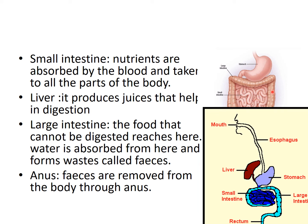The liver is the brown portion you can see here. It secretes juices that help in digestion. These juices pass from the liver and are deposited at the beginning of the small intestine, which helps in the further digestion of food.